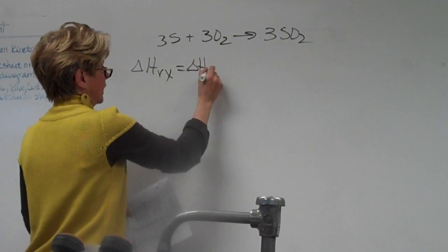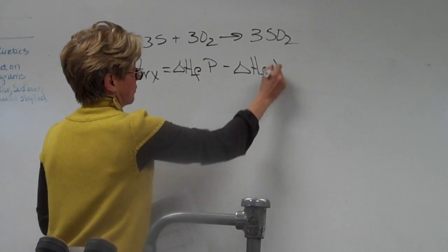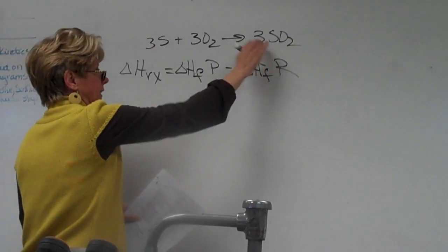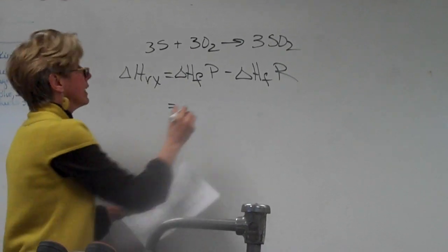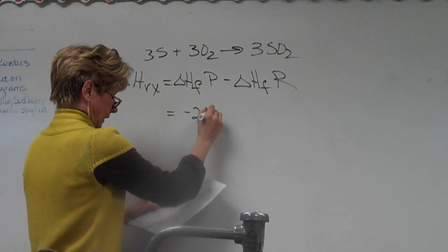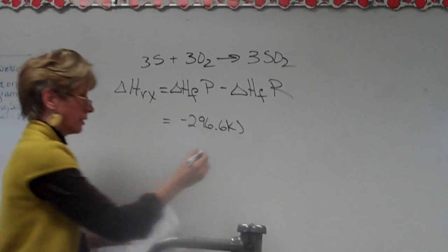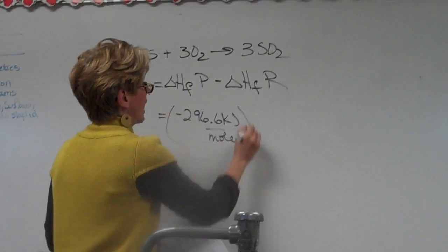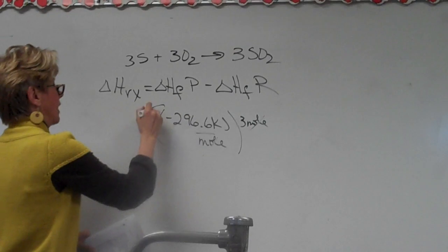Now take a look. Heat of reaction is equal to heat of formation of products minus heat of formation of reactants. Products minus reactants. So what is SO2 equal to? Negative 296.6 kilojoules per mole, right? And I have three moles of it, right? Moles are going to cancel out.